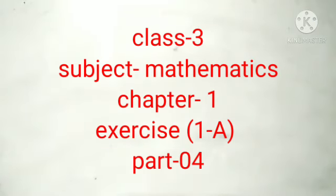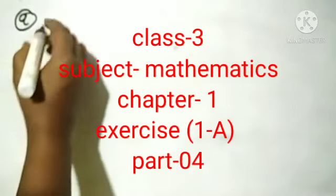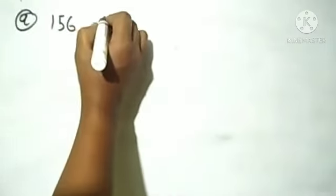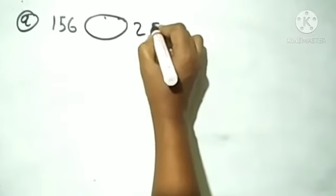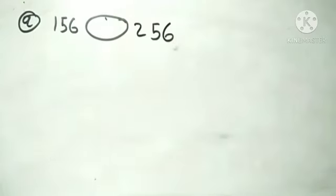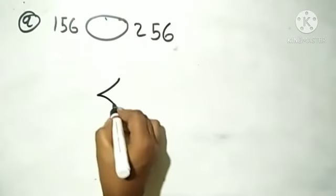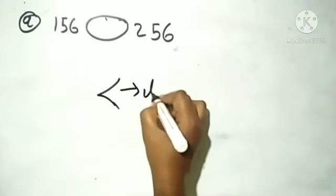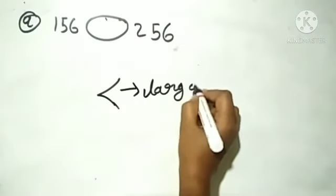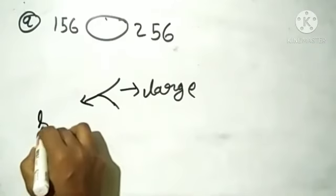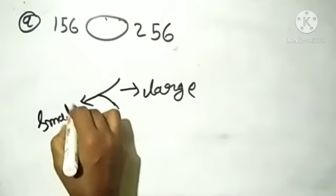So look at question 7. First, we have 156 here. We need to find the symbol — which number is larger and which is smaller. This side will be open — that means large. And this side will be closed — that is the small number.